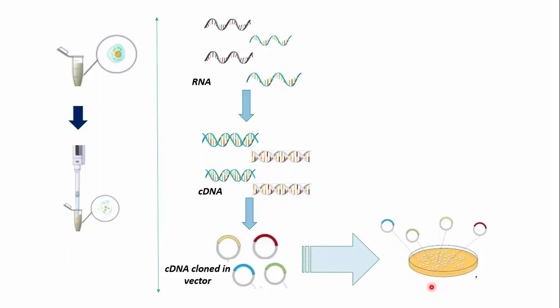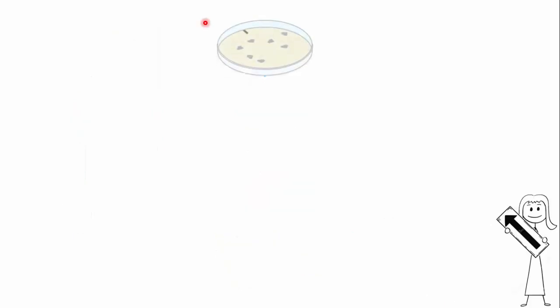This plate would have thousands of colonies, each harboring a specific sequence of interest. We don't know which colony has recombinant vector. So our prime goal is to identify this particular gene, whether it is present among these colonies or not. In order to do that, we will do colony hybridization.